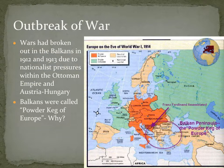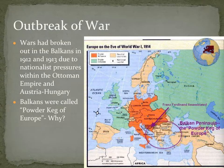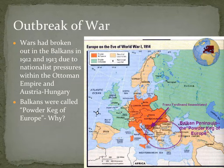So what exactly led to the outbreak of war? We're going to go over the chain reaction of events that started World War I. The region that's important to understand is the Balkans, circled on the map. The Balkan Peninsula had been a place where there was war in 1912 and 1913 due to nationalist pressures within the Ottoman Empire and Austria-Hungary.